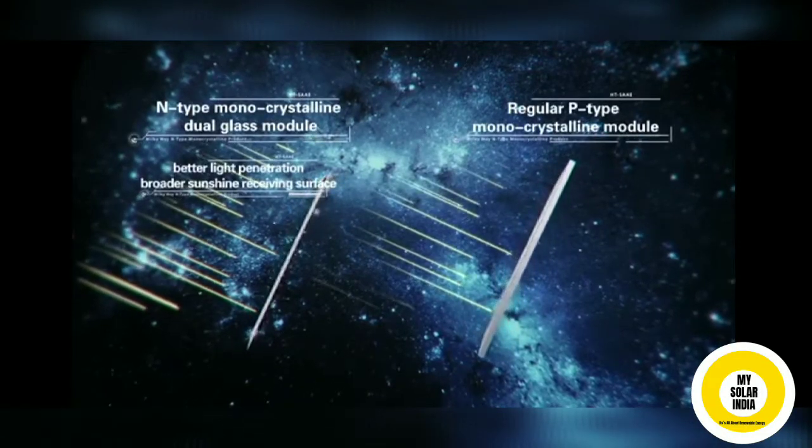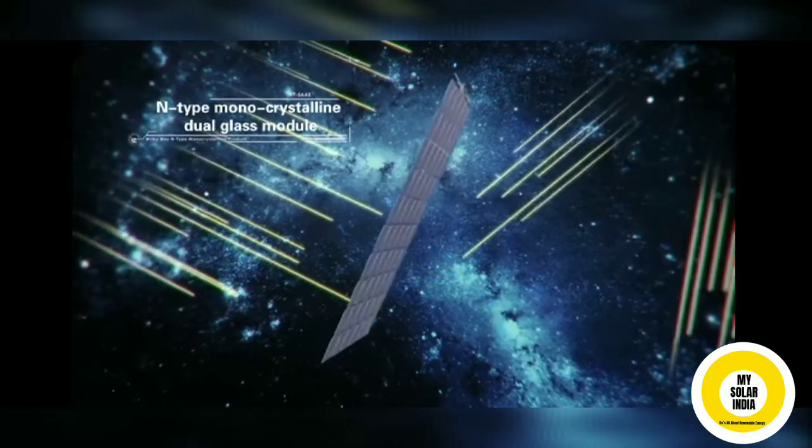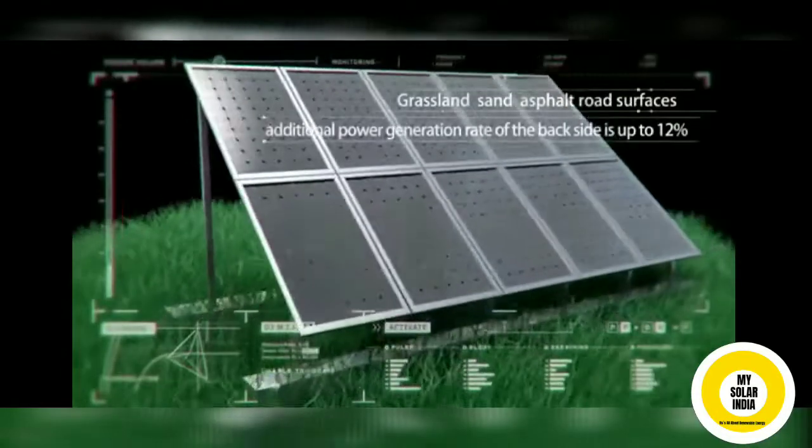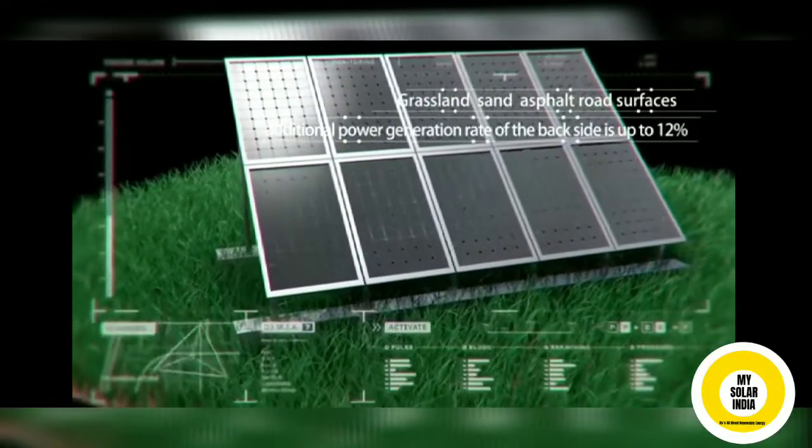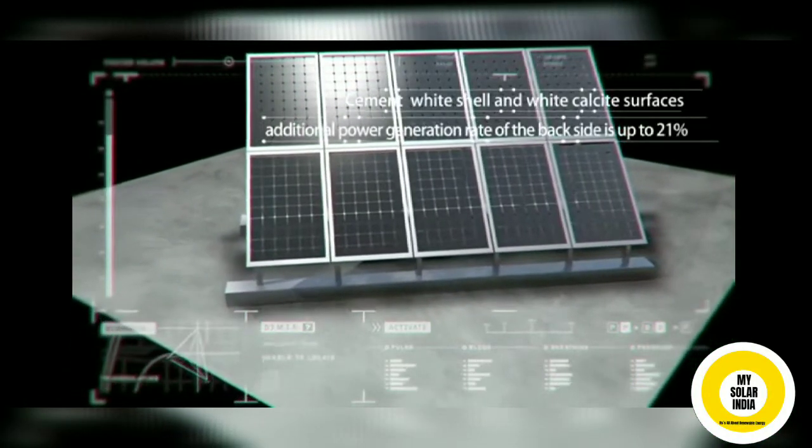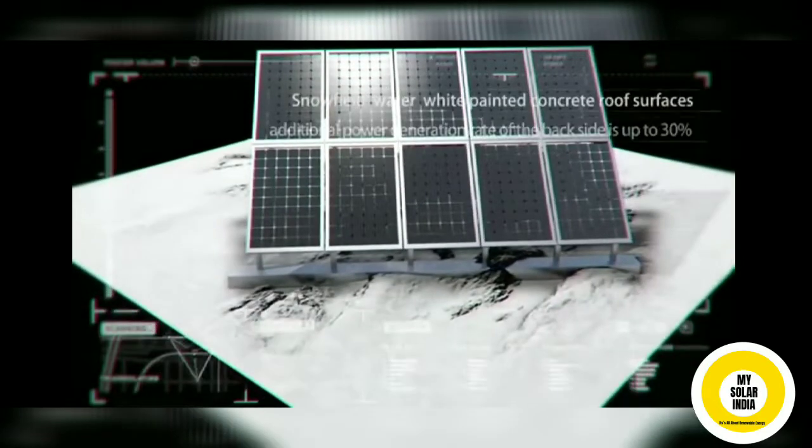Bifacial solar panels are equipped with a glass-to-glass structure that offers enhanced long-term durability. These double-glass modules assembled with bifacial cells have the capability of converting light incident on their rear side into electricity